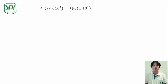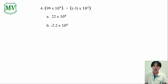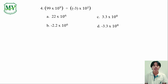Number 4: 99 times 10 to the power of 9 divided by negative 3 times 10 to the power of 2. A: 22 times 10 raised to the power of 6. B: Negative 2.2 times 10 raised to the power of 6. C: 3.3 times 10 raised to the power of 8. And D: Negative 3.3 times 10 raised to the power of 8.